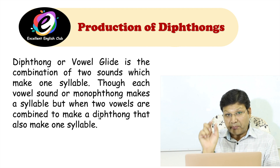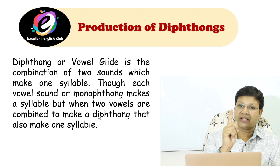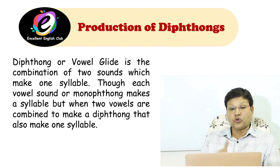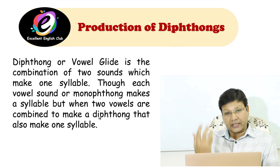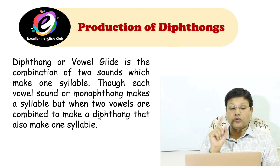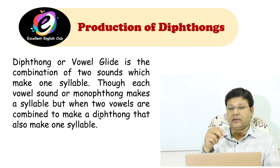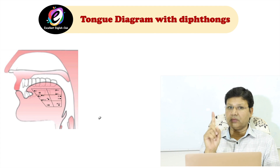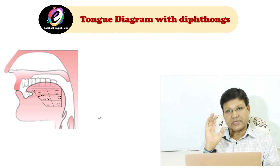So a combination of two vowels makes one vowel and produces one syllable. Though each monophthong makes a syllable, when two vowels are combined to make a diphthong, that also makes one syllable. If you are using two vowels together as a diphthong, it is also considered one vowel and known as one syllable.